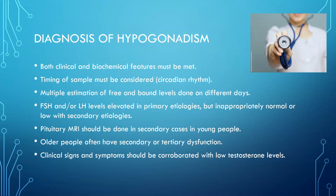How do we diagnose hypogonadism in a male? We need to look at both clinical and biochemical features. The clinical would be signs and symptoms of low testosterone, hypofunction, and small testes. The timing of the sample must be considered because testosterone is released on a circadian rhythm — testosterone levels tend to be higher in the morning and lower at night. You might consider multiple estimations of free and total levels of testosterone done on different days.